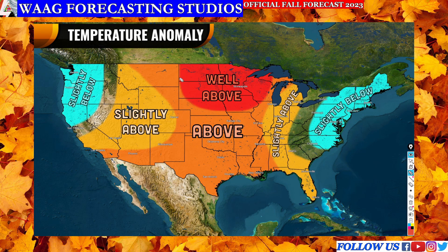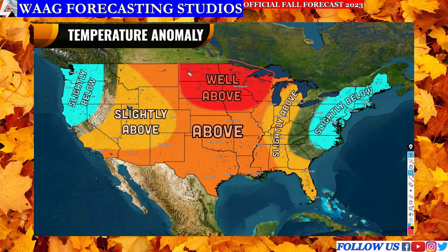On the more significant side, we see a well above average region up here for the north-central United States and some of the Great Lakes. At times we could potentially see up to about 40 degrees above average temperatures. So if your fall temperature typically sits in the 60s, you could see close to 100 degrees Fahrenheit — that's not a guarantee. As another example, if you typically see 40 degrees, you could see up to 80 degrees Fahrenheit. It won't be an everyday event, but with the ridge pushing northward and all that heat building up, this is very typical of El Niño conditions and it's definitely going to be a warmer fall.